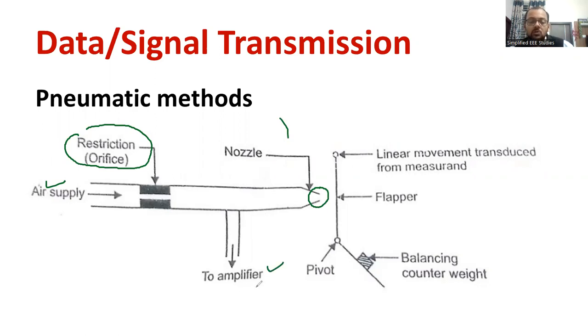And also, the heart of the component is a flapper. A flapper is one of the important part. This is one of the very important part for this method, flapper. And another important part is this nozzle. The flapper nozzle arrangement helps to transmit the data from one point to another point.